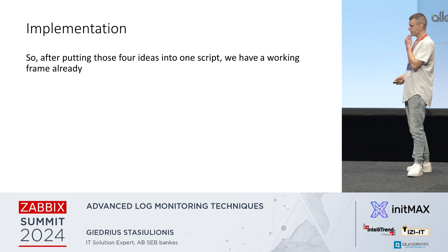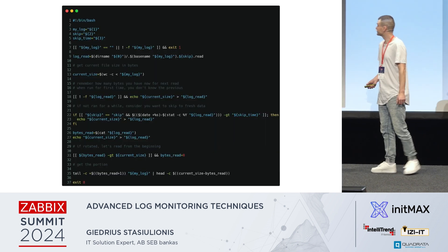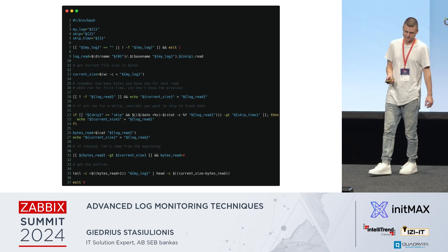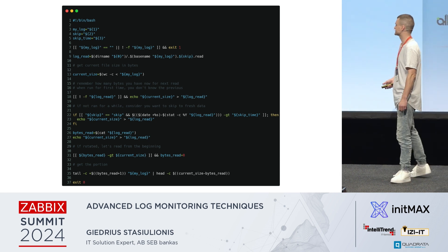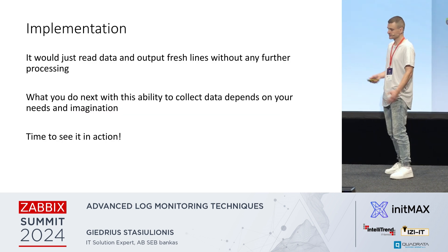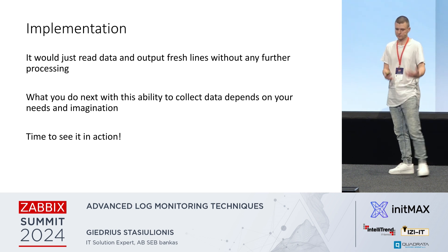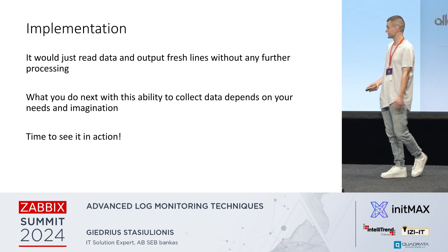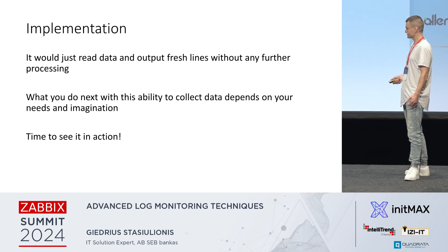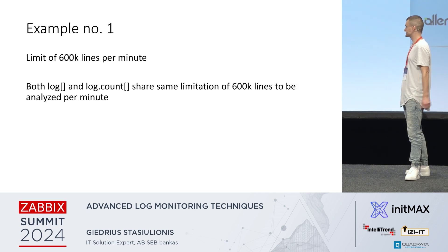Putting those four ideas into one script, we have a working implementation. Removing empty lines and comments, we end up with 16 lines of code — which falls exactly under the Pareto principle. As it stands, this script simply reads the log portion by portion and echoes it, providing the full contents of the log in portions. This is the backbone for our future examples: we have a frame, a method to read the log file, and now let's see some examples of how it works.